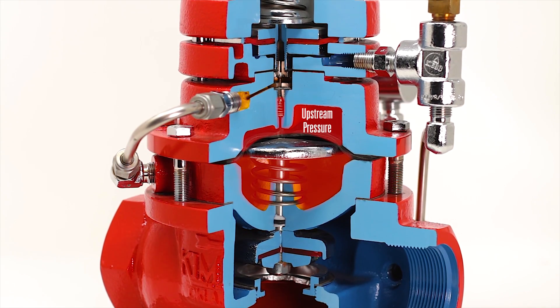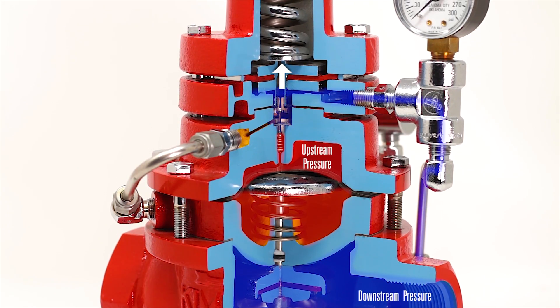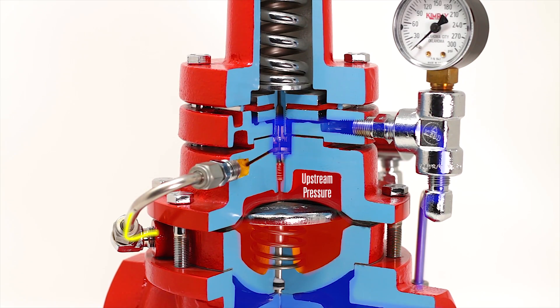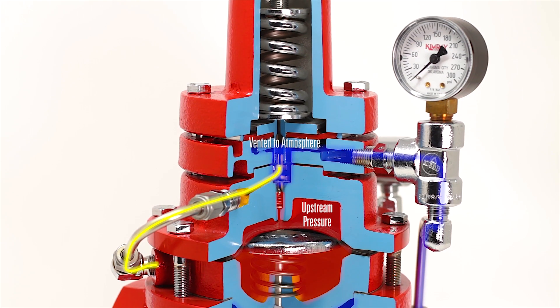If the set point is exceeded, the downstream pressure pushes up on the sensing diaphragm assembly closing off the pilot plug. This allows gas to be vented from underneath the motor valve diaphragm and the downstream pressure to be regulated.